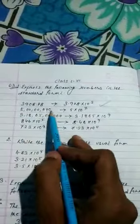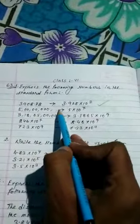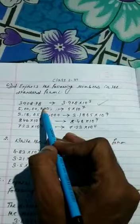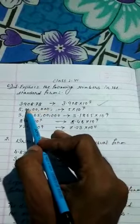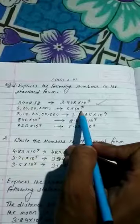Next, 5 - where is the point? The point is after 5, so 5.0 means the point shifts 1, 2, 3, 4, 5, 6, 7 - seven places. So 5 into 10 to the power 7.